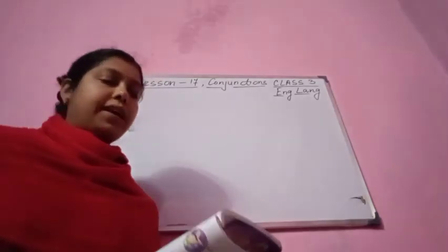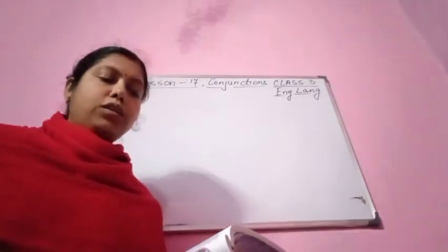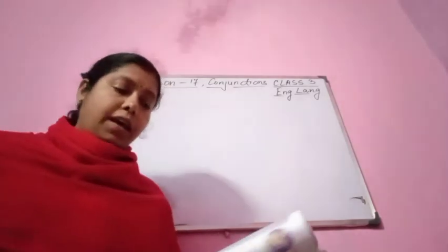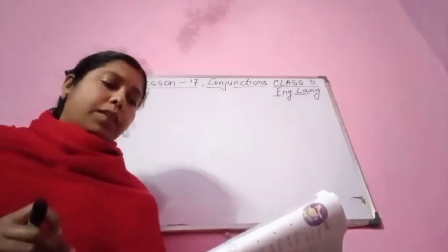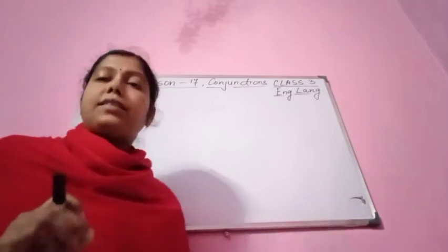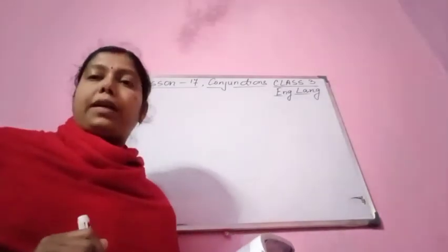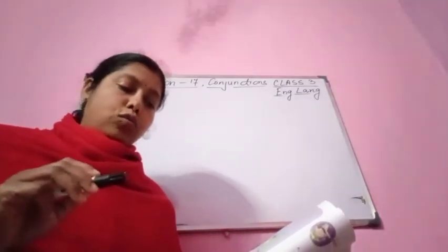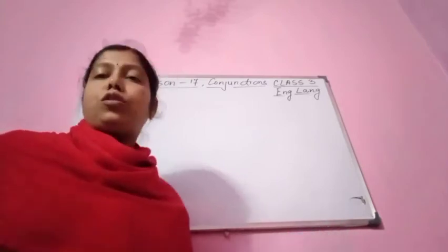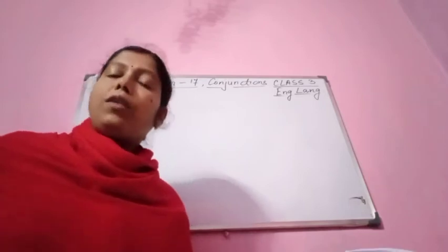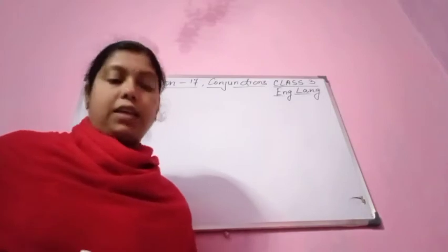Read these sentences and identify their categories in the table. First sentence: Terry and Minnie are going to the party. Here, 'and' is the conjunction. Terry is going to the party, Minnie is going to the party — two similar things are joined. So together: Terry and Minnie are going to the party.